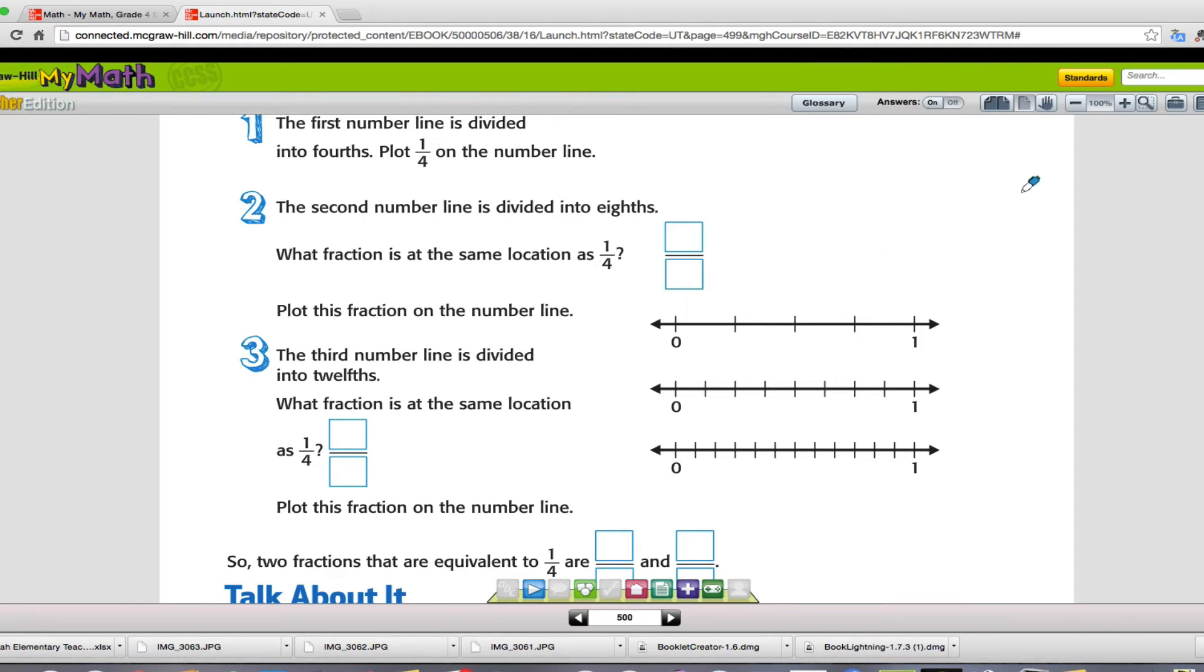So we'll use red here to plot that. So we go 1/4 of the way. You'll notice it starts at 0 and ends at 1. So 1/4 of the way to 1 is the red mark.